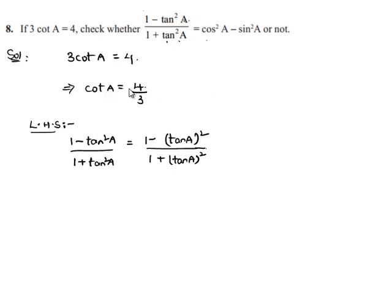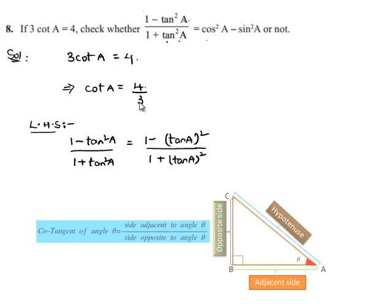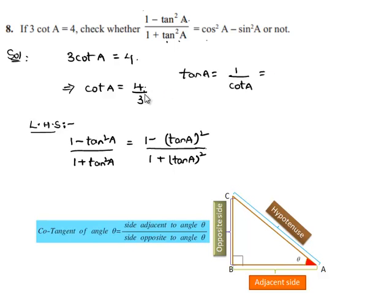As the value of cot a is given, we know tan a is nothing but the reciprocal of cot a. We can write tan a is equal to 1 by cot a, which is nothing but the reciprocal of 4 by 3, that is 3 by 4.